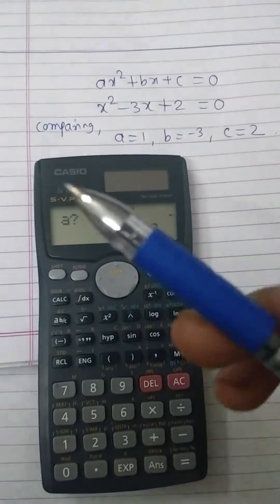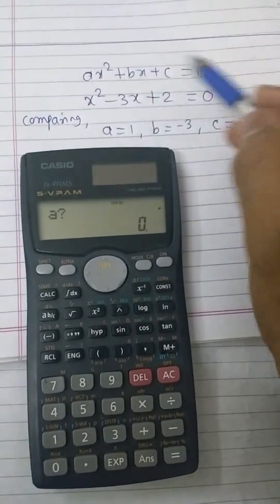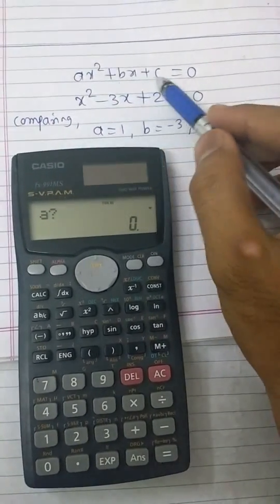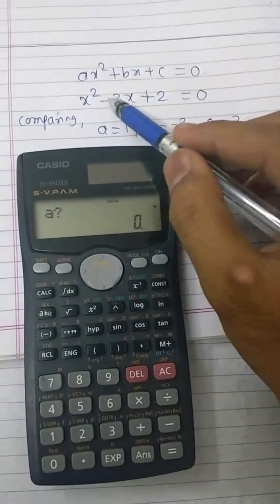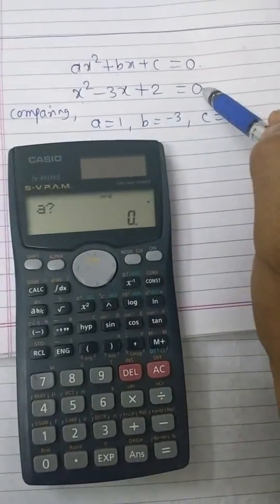Then we will see a question mark. See, this is the general form of the quadratic equation: ax² + bx + c = 0. And I have taken one example, x² - 3x + 2 = 0.